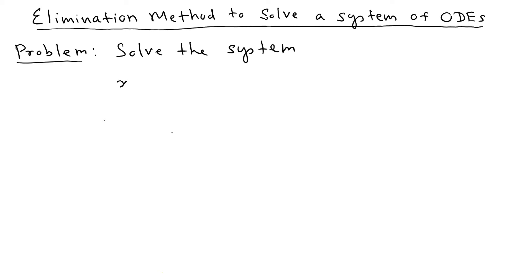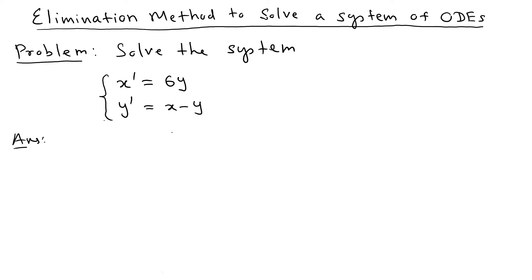The problem we consider is: solve the system where x prime equals 6y and y prime equals x minus y. You can use different numbers and the method works the same way.